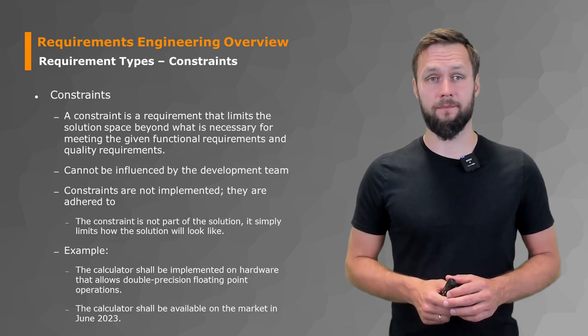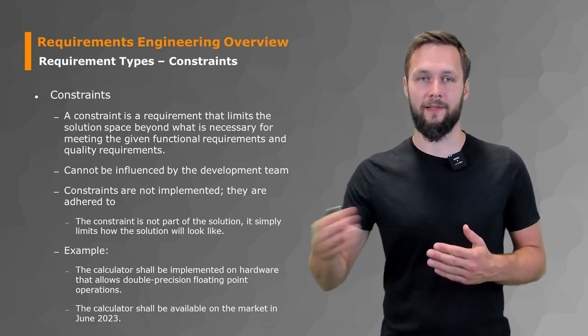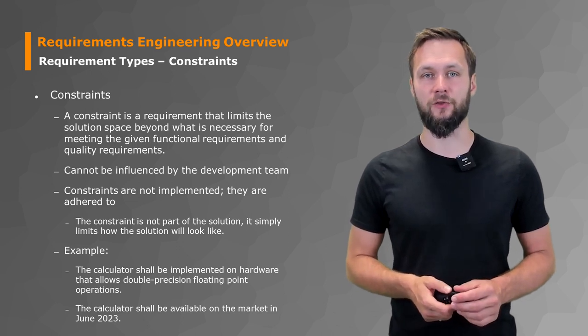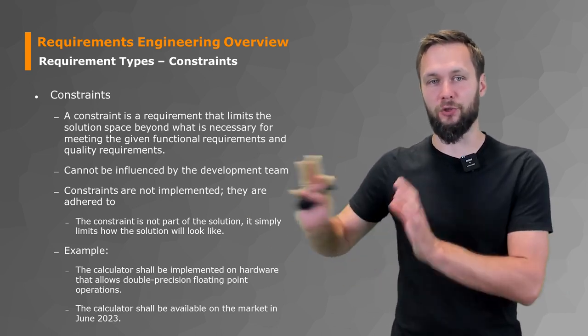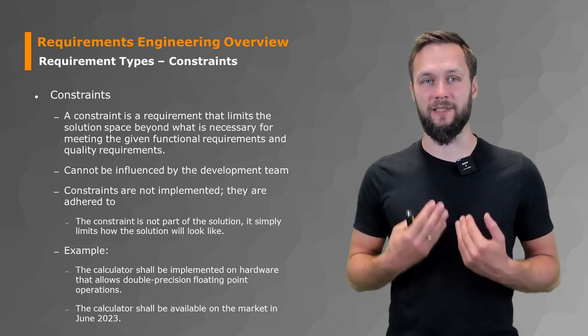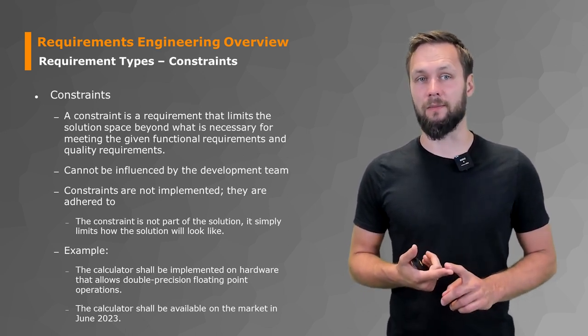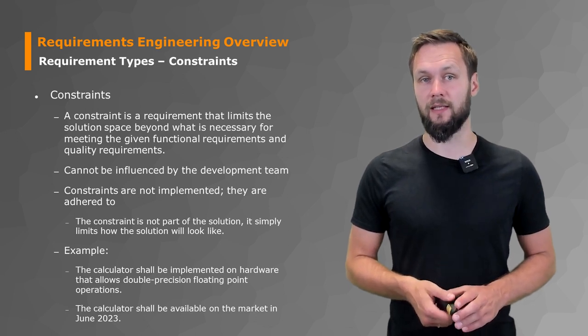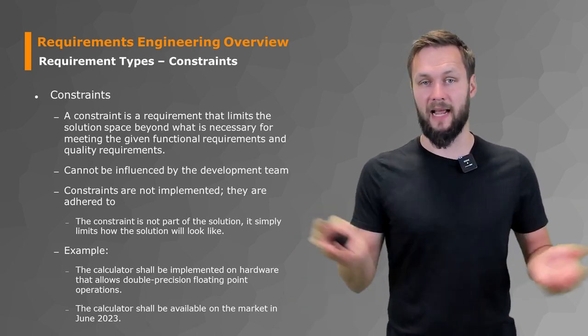Finally, the third category: constraints. Constraints are probably among the easiest because it's just about where are your borders or what limits what you can do. A constraint is a requirement that limits the solution space beyond what is necessary for meeting the given functional requirements and quality requirements. It's really nice to push stuff out that just makes your life more difficult, but on the other hand, the stakeholders are giving you the constraints, so it could still be unrealistic and quite painful. They cannot be influenced by the development team, and constraints are not implemented - they are adhered to. This is not something you have to build or implement; you just have to make sure that you adhere to them. The constraint is not part of the solution; it simply limits how the solution will look like.